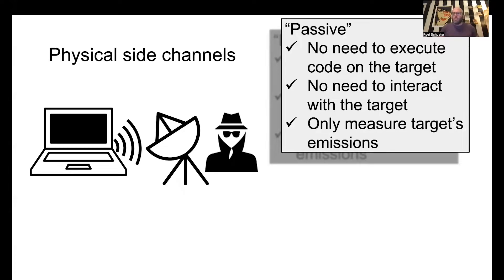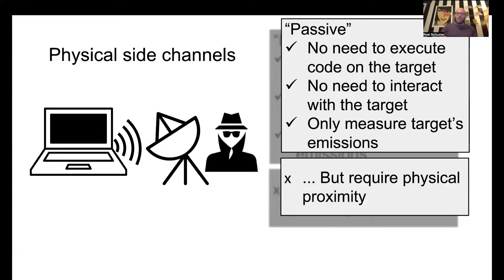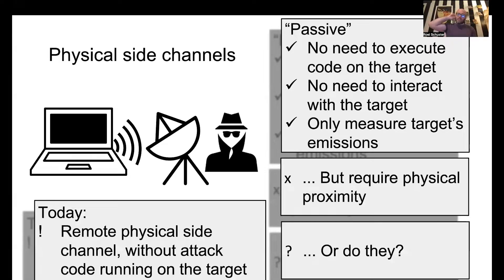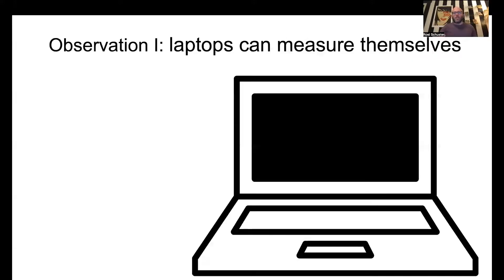You don't need to interact with the target at all — all you need to do is measure the target's emissions externally to the device. But this does require physical proximity; you have to attach the probe physically next to the device, and that can be mitigated and may be excluded from some threat models. So what we really want is a physical side channel attack that can be done completely remotely. Today we're going to challenge the long-held assumption that physical side channels require physical proximity, intuitive though that assumption might be.